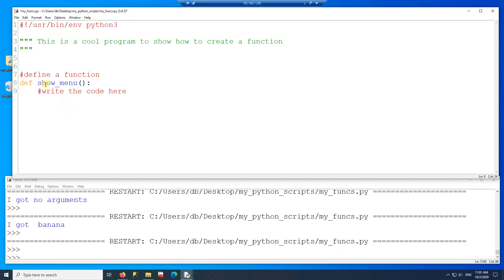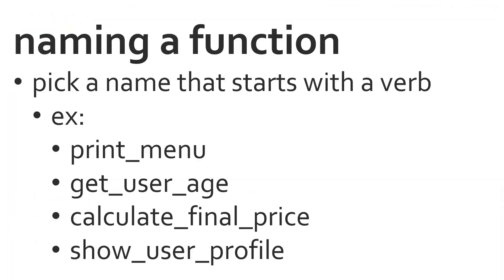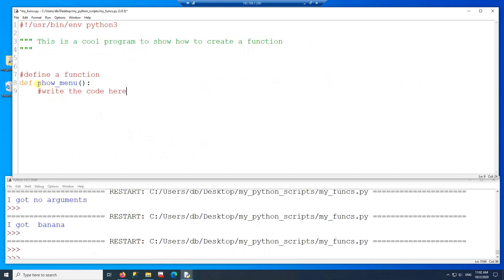Before we continue, let's talk about the name of the function. The name of the function is important. Every time you name a function, it should start with a verb — for example, printMenu, getUserAge, calculatePrice, or showSomething. The function performs an action, so it's easy for someone else reading your code to understand what a function does based on its name. So my function is showMenu.